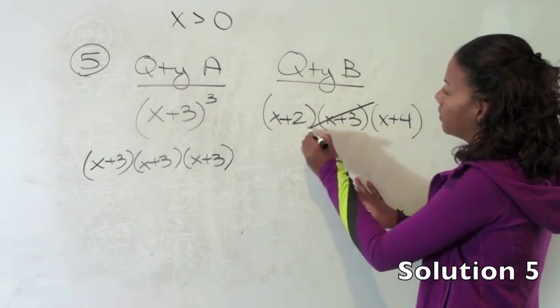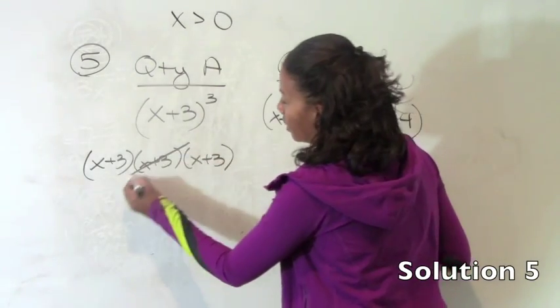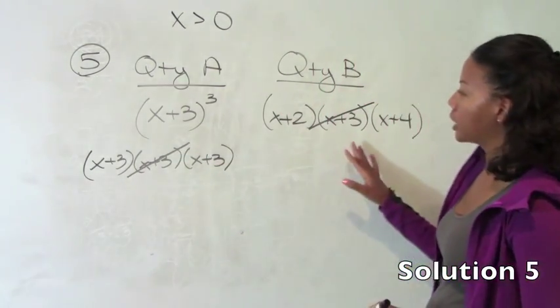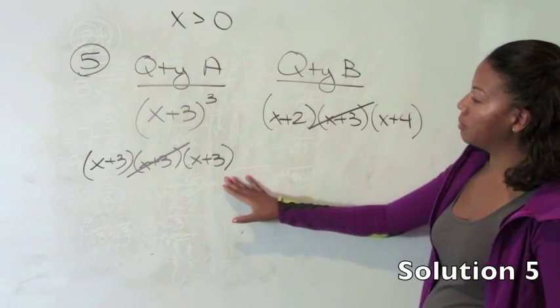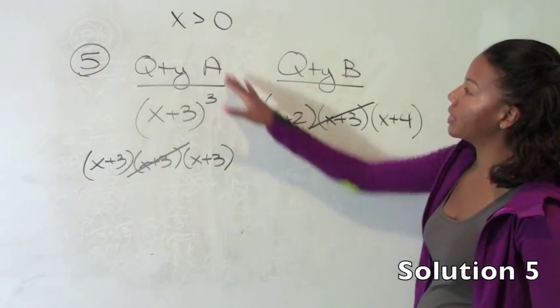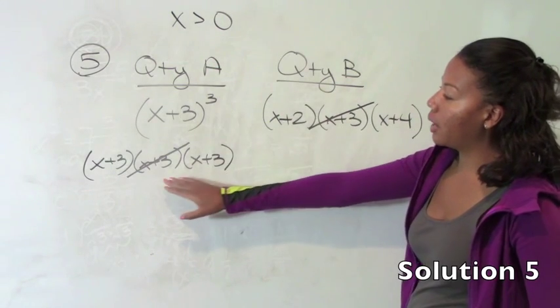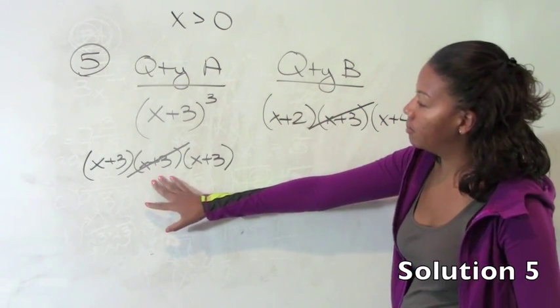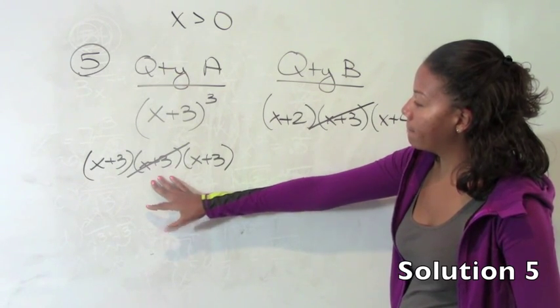Now one thing that we can do is, since we have an x plus 3 on both sides, is to get rid of the x plus 3 on both sides because it's like we divided this side by x plus 3 and we divided this side by x plus 3 and that's completely allowable. We also know that x is greater than 0 so we're not worried about dividing by a 0 in any way.